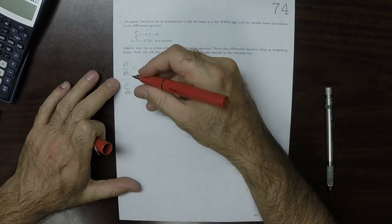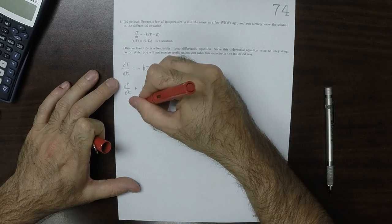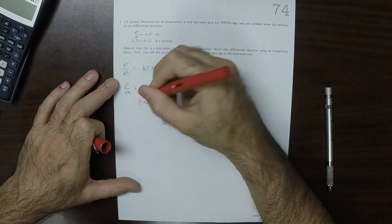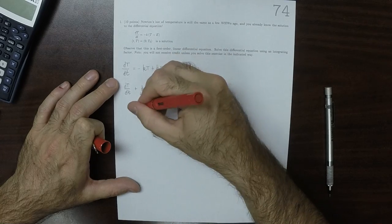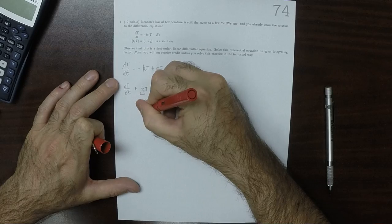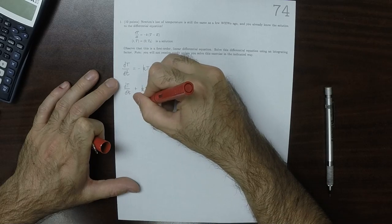This constant here is P of t, since the independent variable is T.